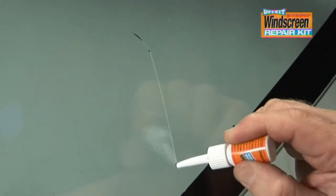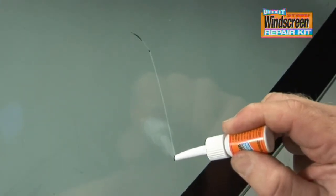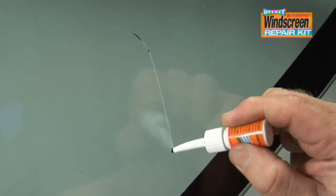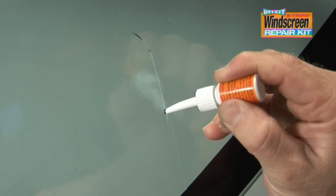Start from the lowest point of the crack and slowly and smoothly inject the resin into the crack. Never leave any air pockets in the crack as this will affect the end result.